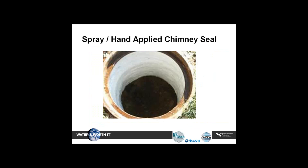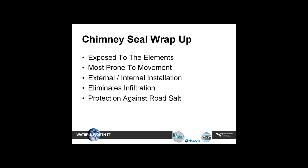The newest type of chimney seals are hand-applied or sprayed-on chimney seals. These are used when you have irregular chimney sizes or oddly shaped ones such as those found in square inlet boxes. These give you about 500% elongation and are chemically resistant to road salts. To wrap things up, chimneys are the area of the manhole most exposed to the elements. Because of the constant pounding of traffic, they are prone to material breakdown and movement. Repairs can be made using internal or external solutions that will help eliminate infiltration and inflow and help protect against road salts.